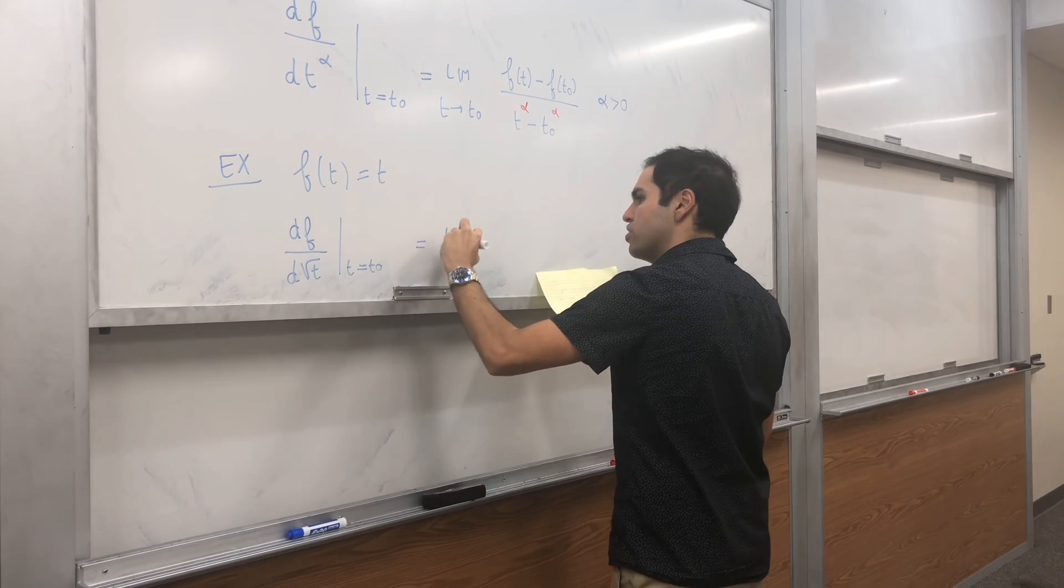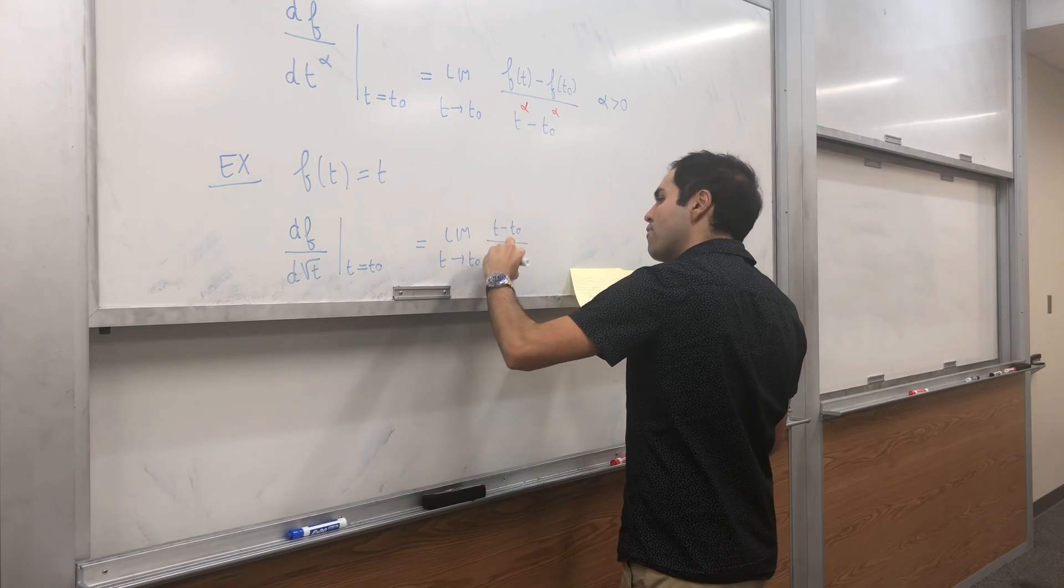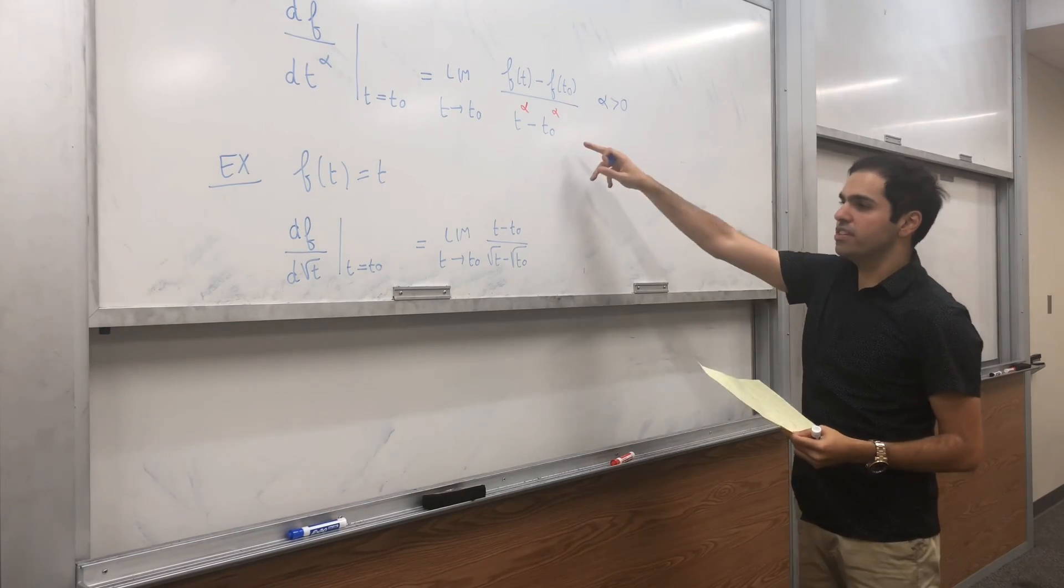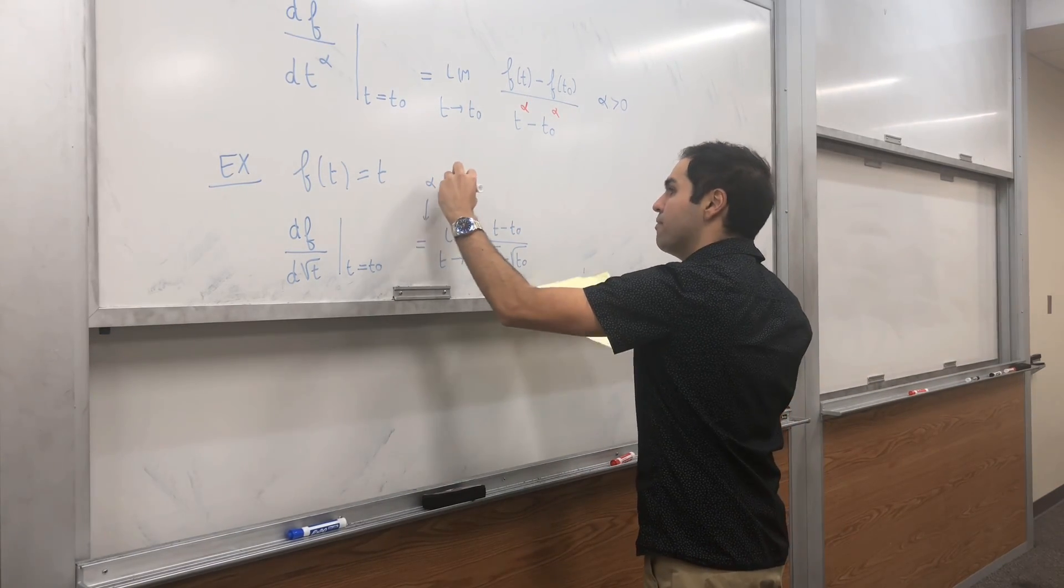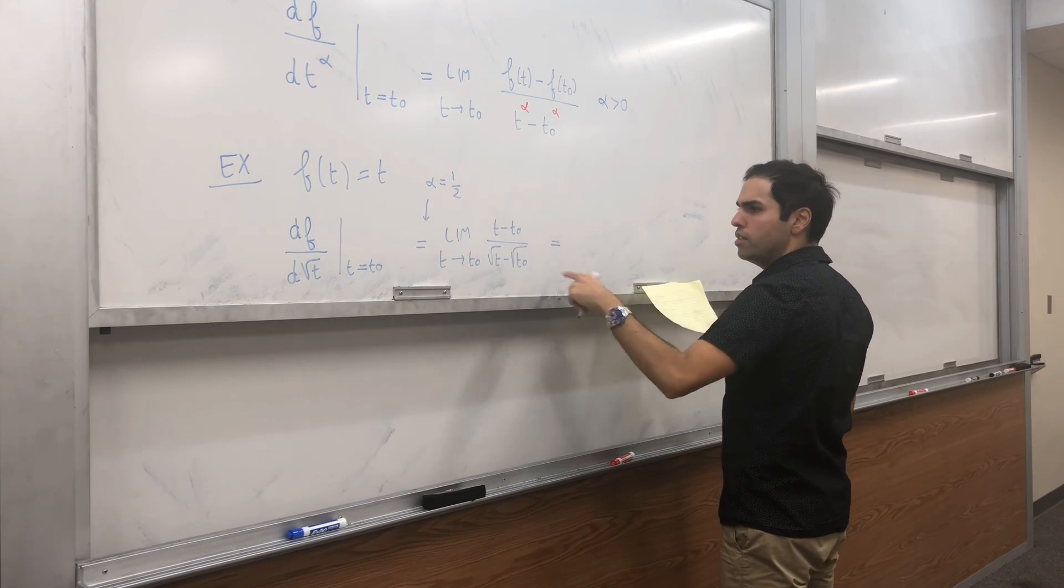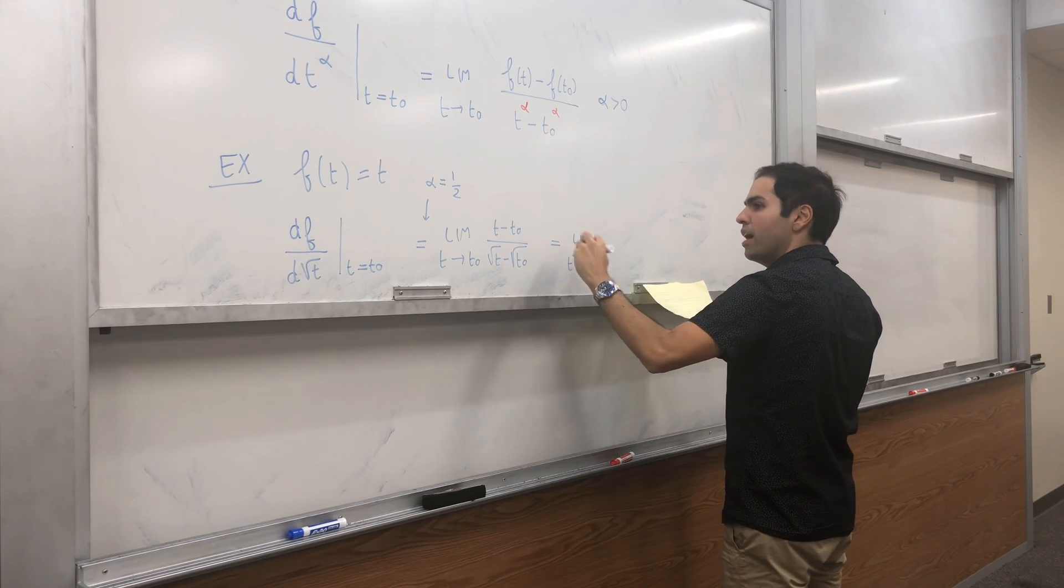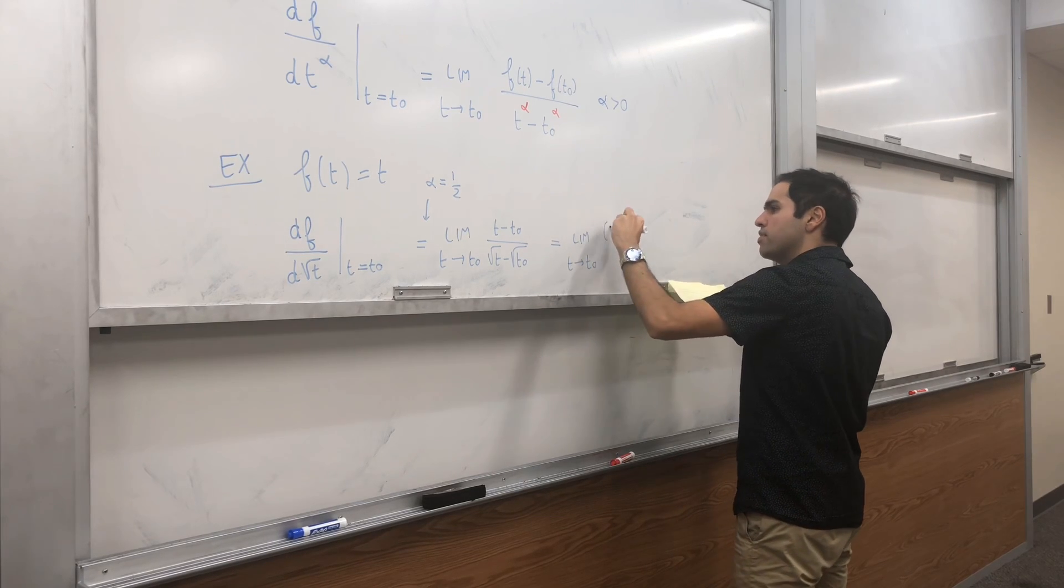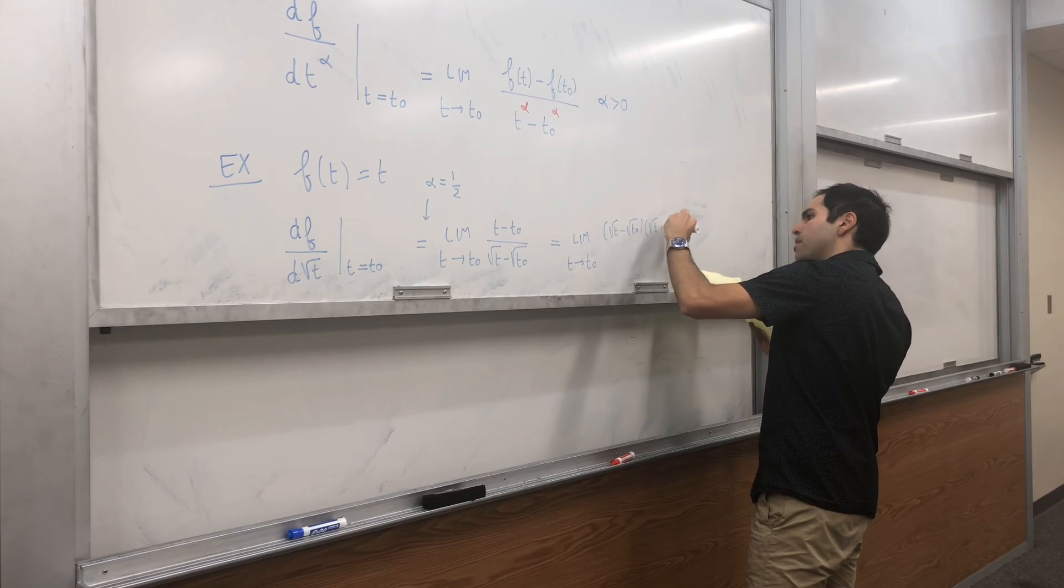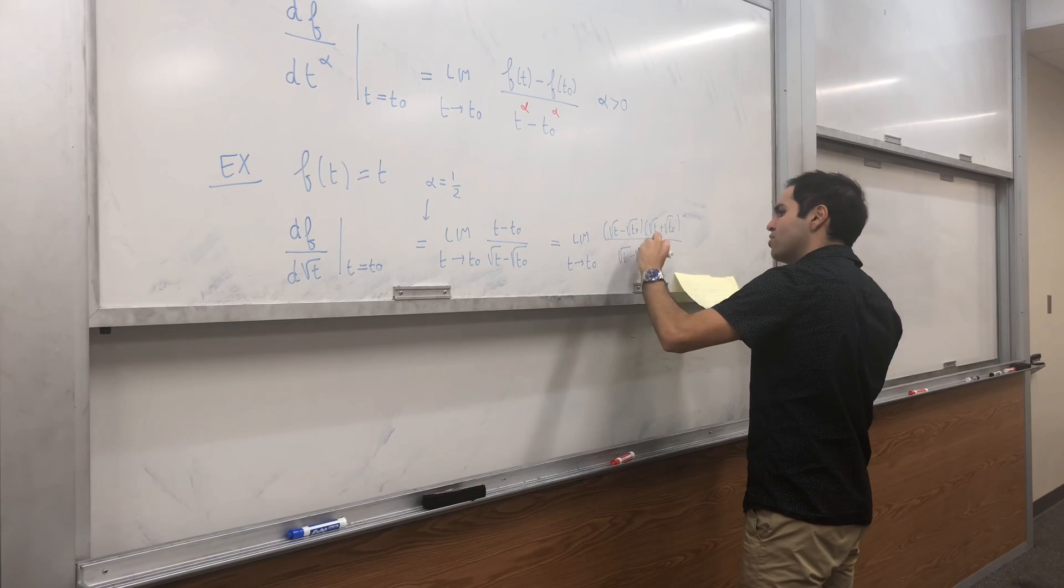Well, that's just the limit as t goes to t naught of t minus t naught over square root of t minus square root of t naught. So, we're just taking alpha to be one-half. And it turns out, at least if t is positive, you can write this as a difference of squares. So, this is square root of t minus square root of t naught times square root of t plus square root of t naught over square root of t minus square root of t naught.